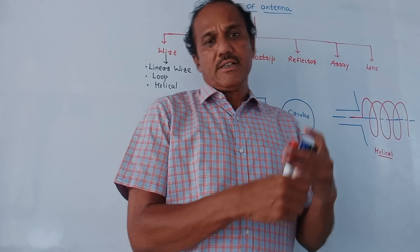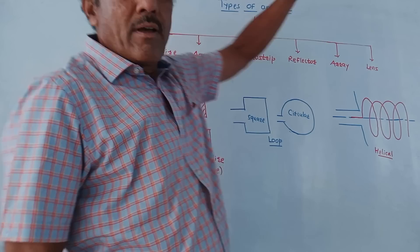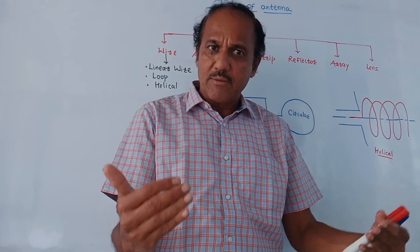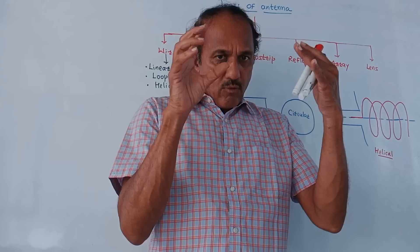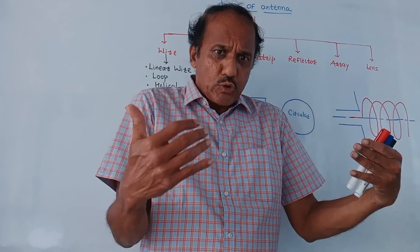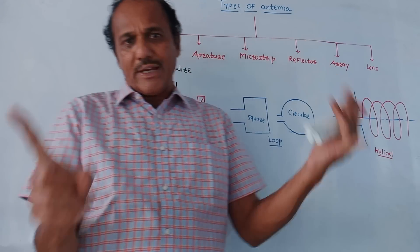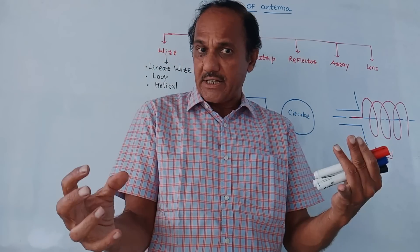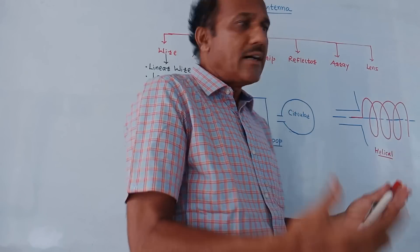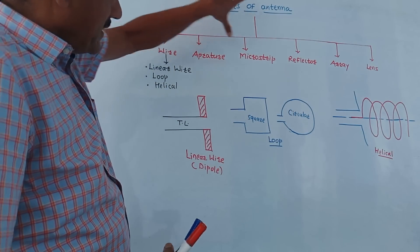Hello and welcome back to this channel. Dear students, this topic is types of antenna. In the earlier video we discussed the radiation mechanism of an antenna and what an antenna is. It is basically the means to transfer electromagnetic waves. Simply, there are two types of antennas: transmitting antenna at the transmitter side and receiving antenna at the receiver side. This chart shows the different types of antennas.